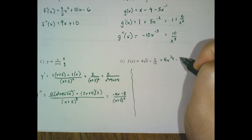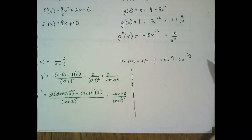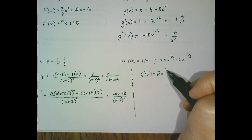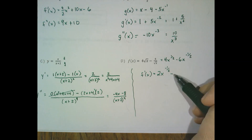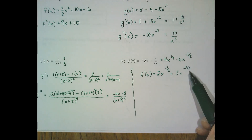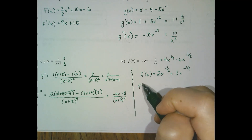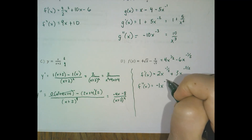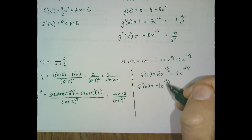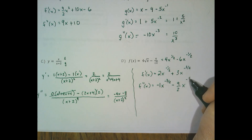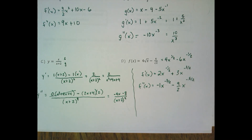Rewriting as fractional exponents makes it easier to apply the power rule in Part D. The first derivative is 4 times a half, subtract 6 times negative a half, then we decrement the exponents by 1. The second derivative applies the power rule again: 2 times the negative half is negative 1, subtract 1 from the exponent, and then 3 times 3 halves is negative 9 halves, x to the negative 5 halves. There's our second derivatives and a review of the product and quotient rule. Thanks for watching, have a good day.